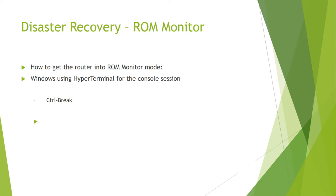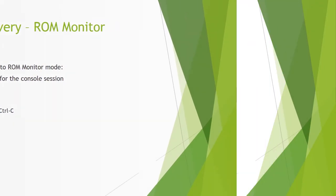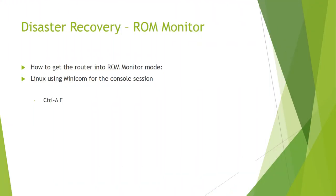To get the router into ROM Monitor mode on Windows using HyperTerminal for the console session, use Control Break. On BSD units using tip for the console session, enter tilde hash or Control dash, then Break or Control C. On Linux using minicom for the console session, use Control A F.